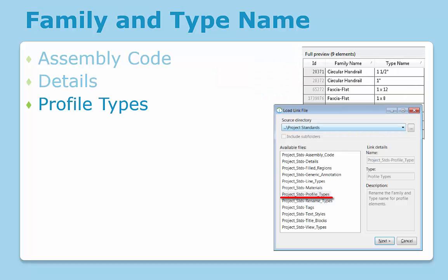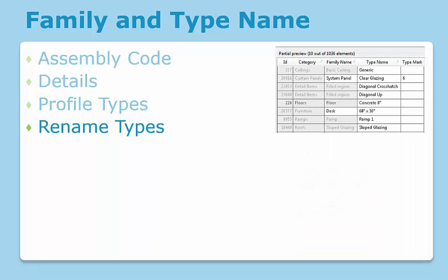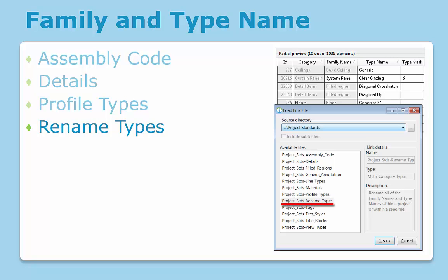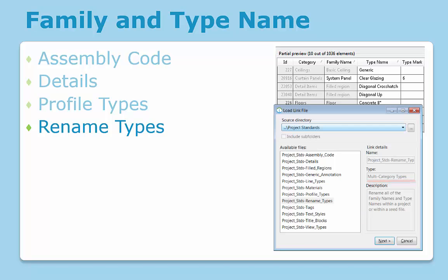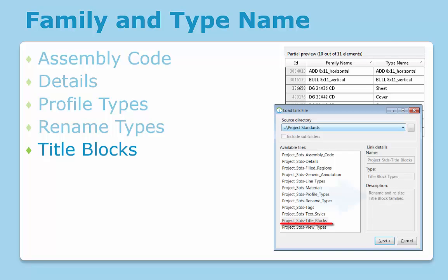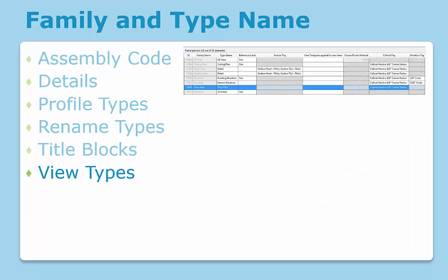The profile types link can be used to rename the family and type name for profile elements. The rename types link may be used to rename all of the family and type names within a project or within a seed file. This particular link is also a multi-category link, which means that information can also be gathered from system families. The title blocks link can be used to rename and resize title block families. The view types link may be used to edit view type data, including type, default view template assignment, as well as callout tag and elevation tag assignments.